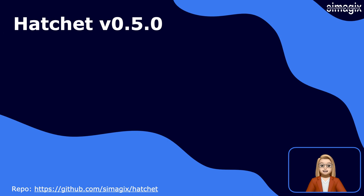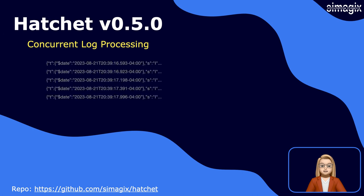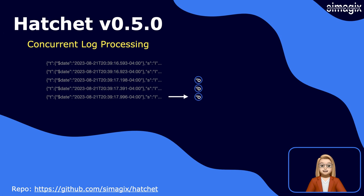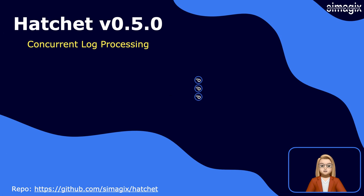In this latest release, Hatchet version 0.5.0 embraces the power of multi-threading for log processing. By leveraging multiple threads, we have significantly enhanced performance. The default thread count is intelligently set to the number of CPU cores minus one, ensuring optimal utilization of system resources.